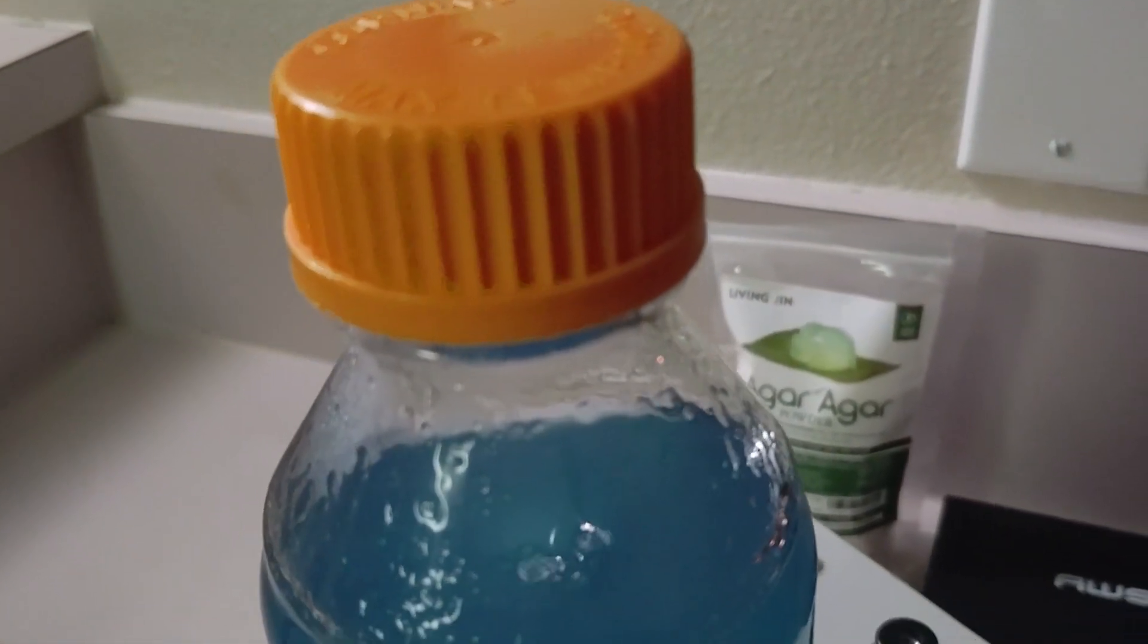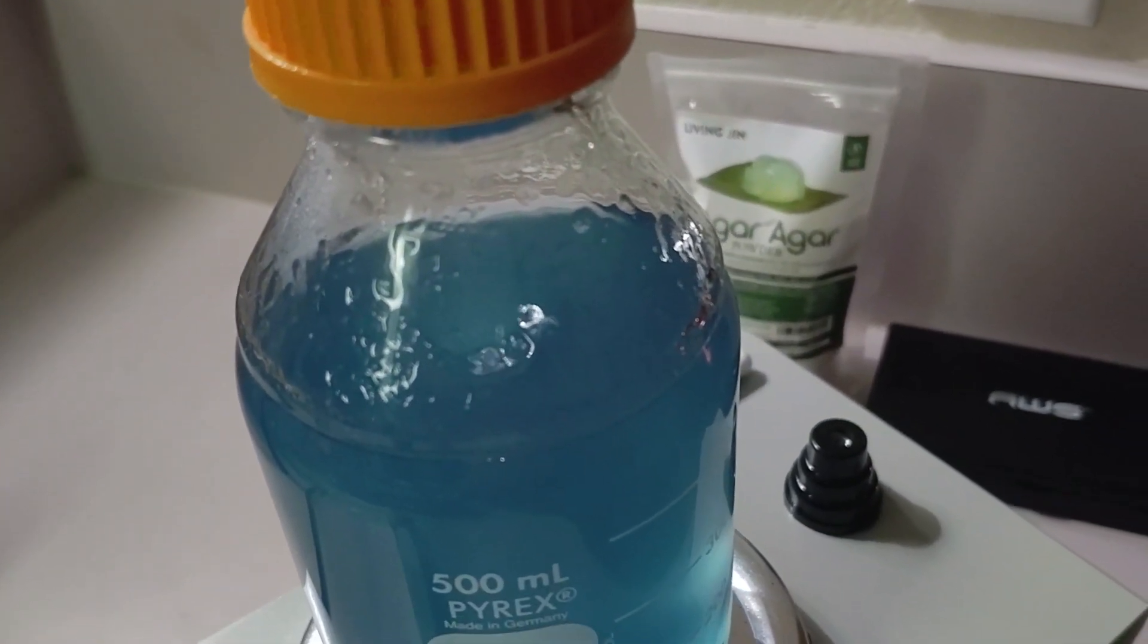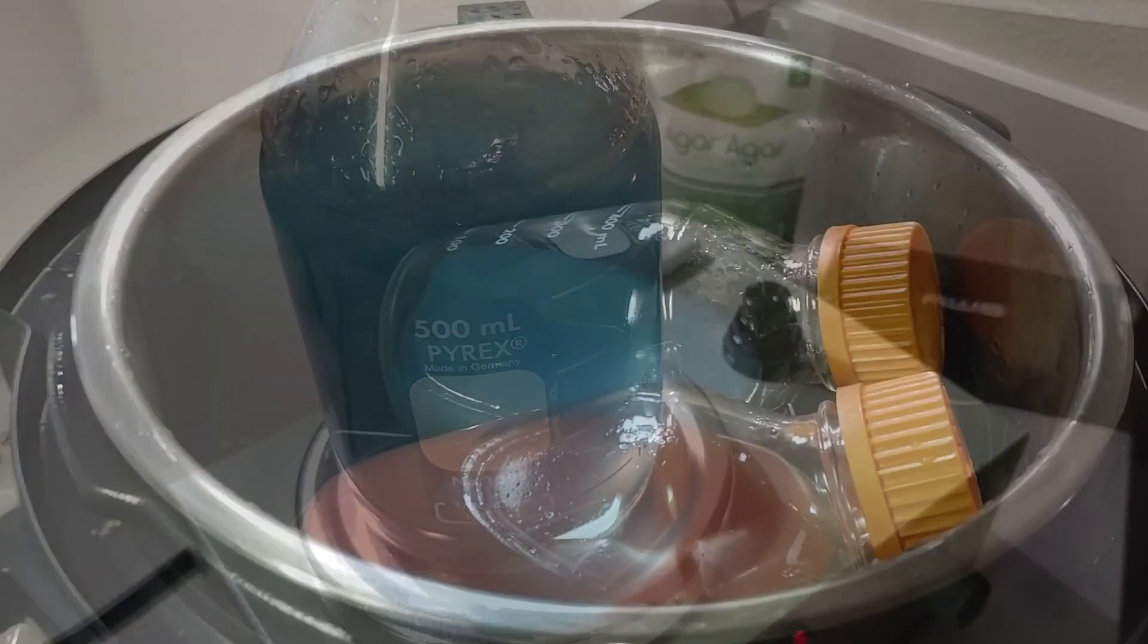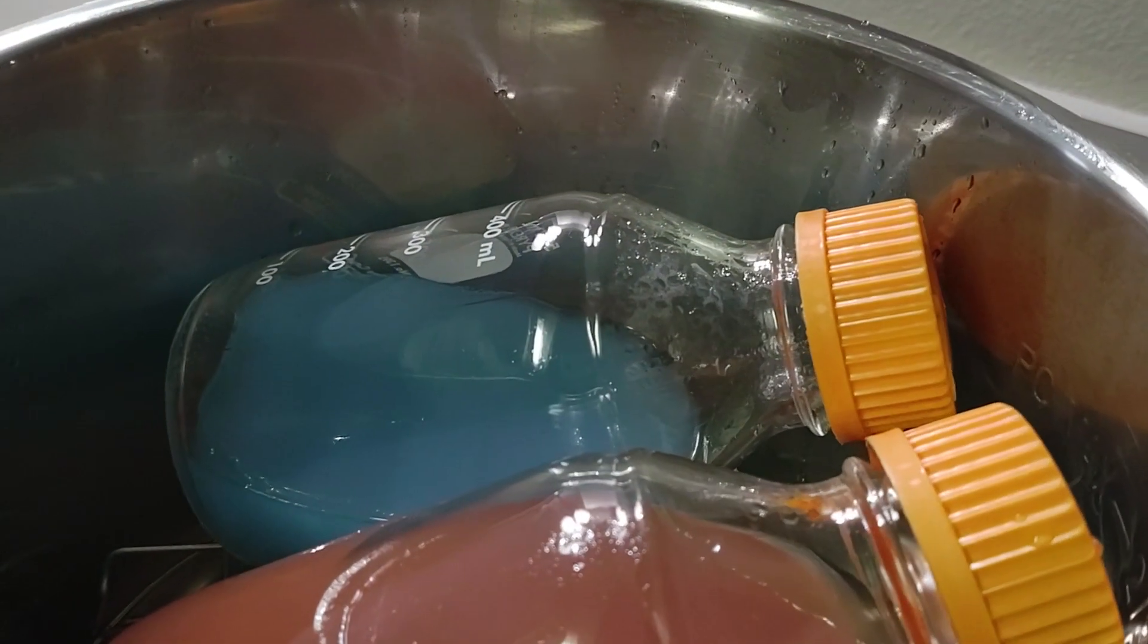Once you have allowed the agar to completely dissolve without clumping then you're ready to sterilize in the pressure cooker. This usually takes about five minutes with the heated stir plate.